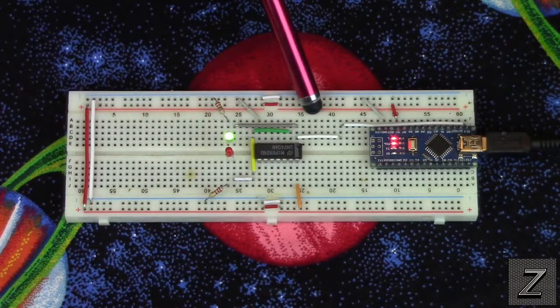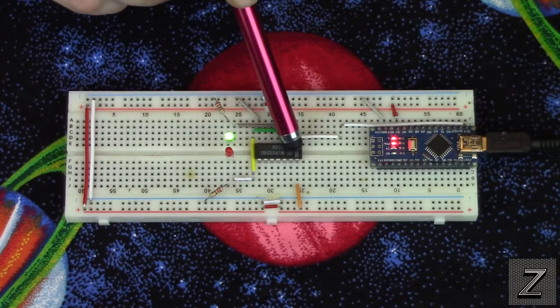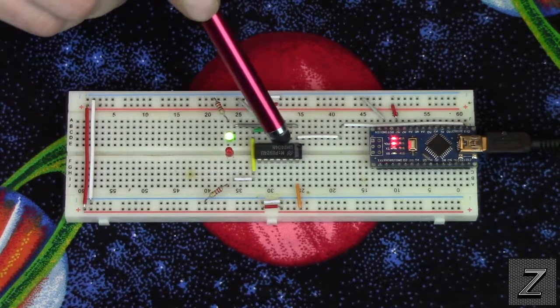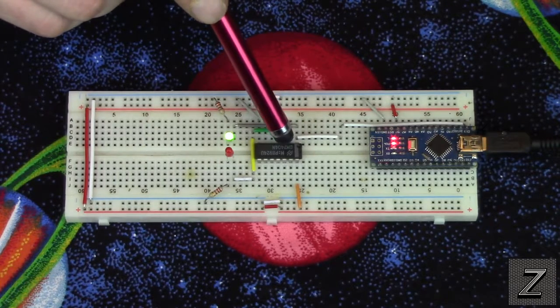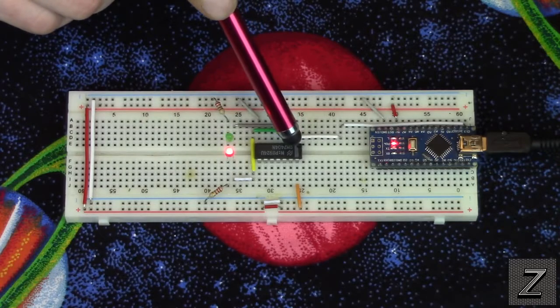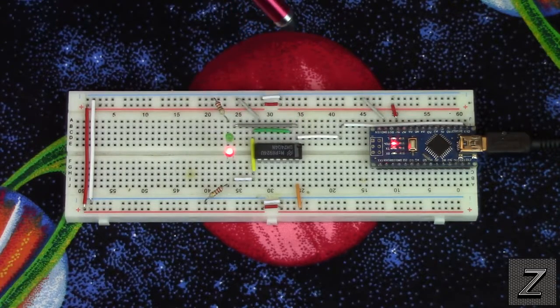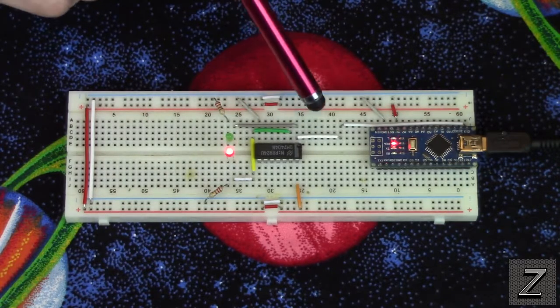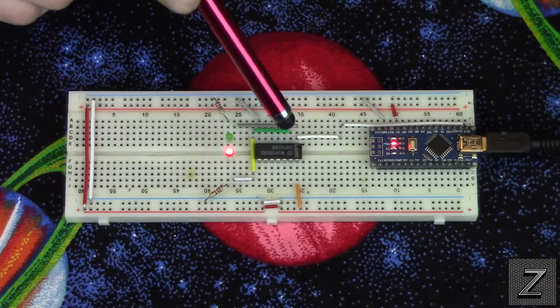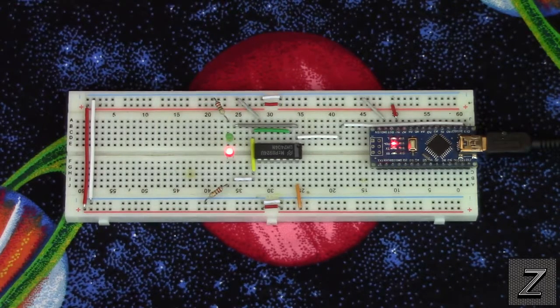Now how this works is when the input pin is high, the output pin is low. When the input pin is low, the output pin is high, so it just reverses whatever logic is coming into the chip. That's how simple it is.